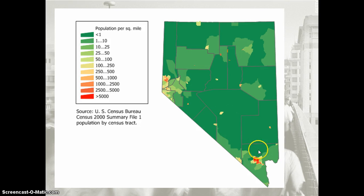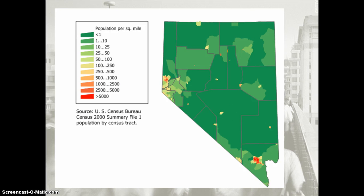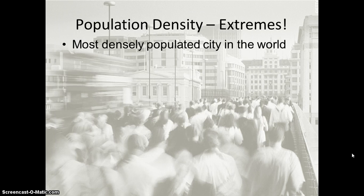However, there are some areas of Nevada — specifically Las Vegas, as well as the Reno/Lake Tahoe area — that have a higher population density. We can therefore assume the population distribution of Nevada is not uniform throughout the entire state; it has small pockets of more densely populated areas.